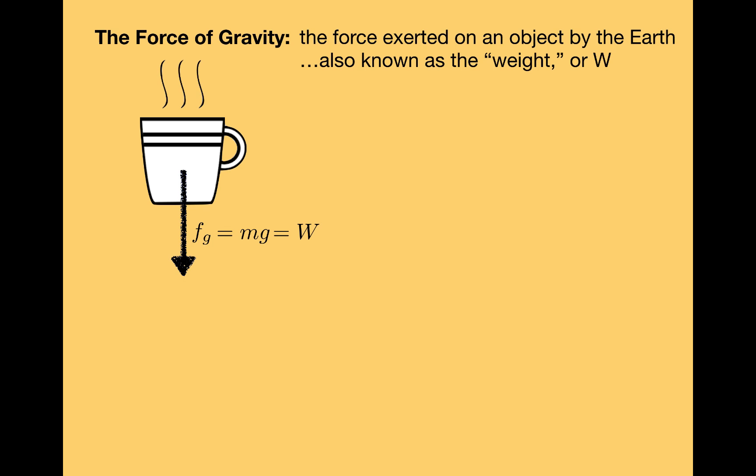Now we can use Newton's second law, f net equals ma, to show why all objects have the same acceleration in freefall. I'm going to replace the net force in this equation with the forces that are acting on the cup. There's only one force acting on an object in freefall. That's the definition of freefall.